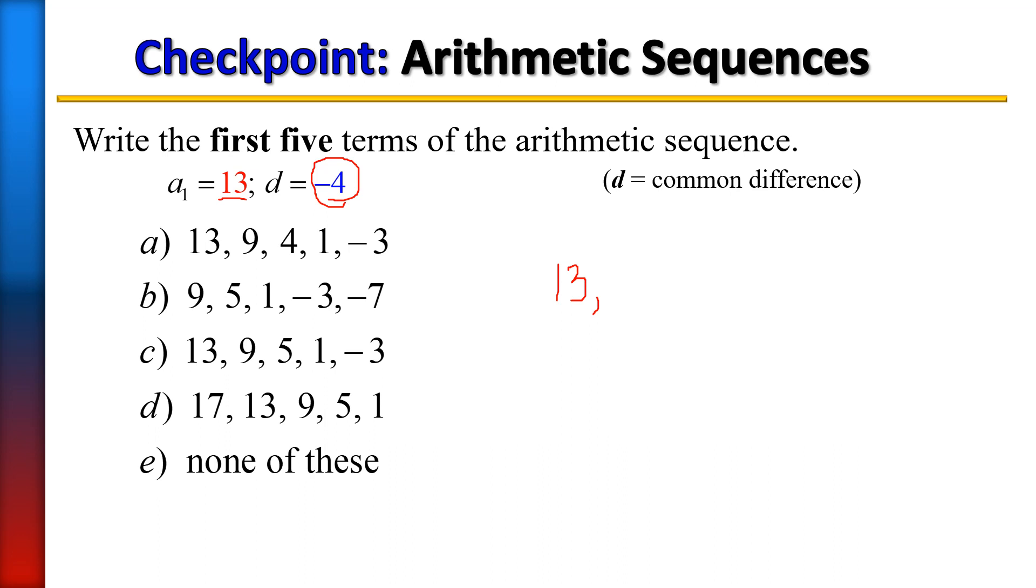Okay, so right away, if we were given our first term of being 13, we can automatically cancel out choices B and D because there's just no way possible that could be your answer if your first term starts with 13.